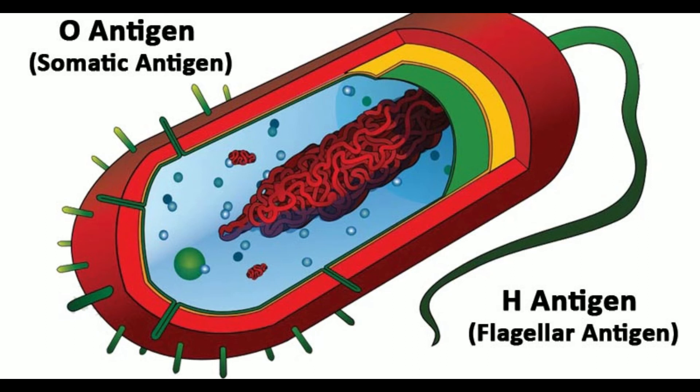Point 18: Role as virulence factor — O antigen is among the most important virulence factors, responsible for endotoxic activity, and protects the bacteria from phagocytosis and the bactericidal effect of complement. H antigen makes the bacteria motile, hence contributing to their virulence. Point 19: Existence in phases — O antigen has no phases; flagellar (H) antigens exist in two alternative phases.